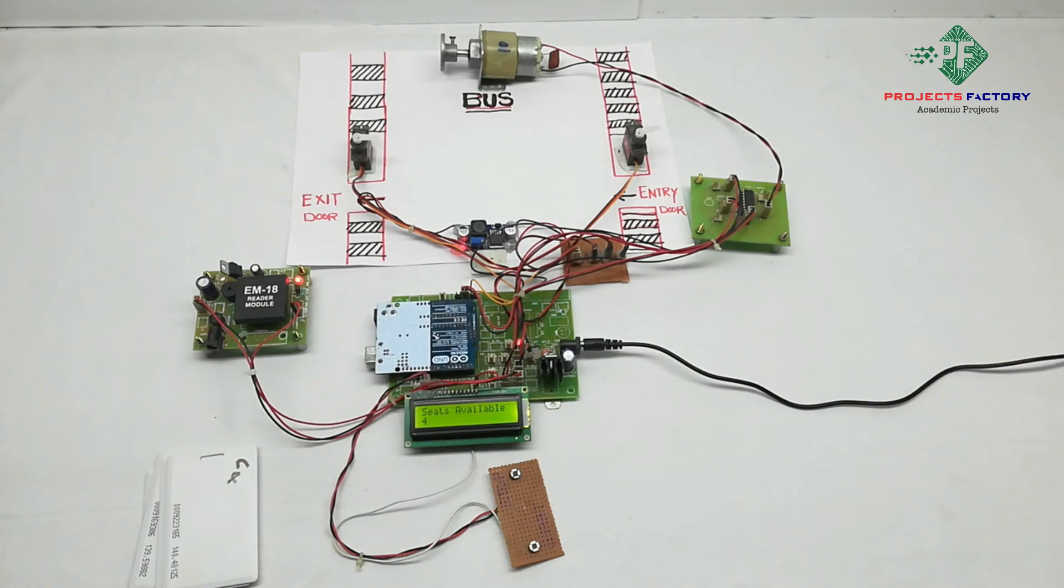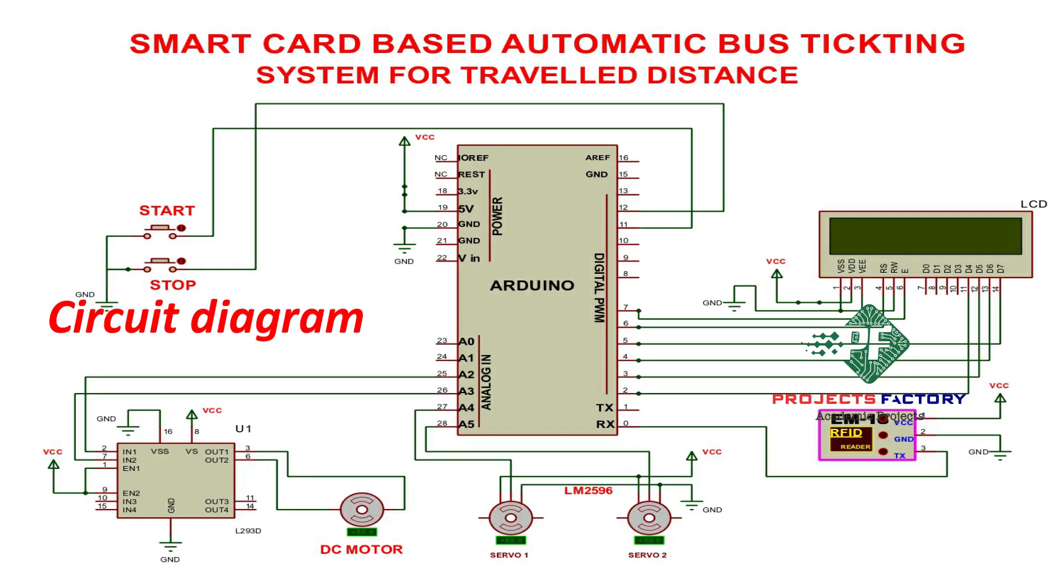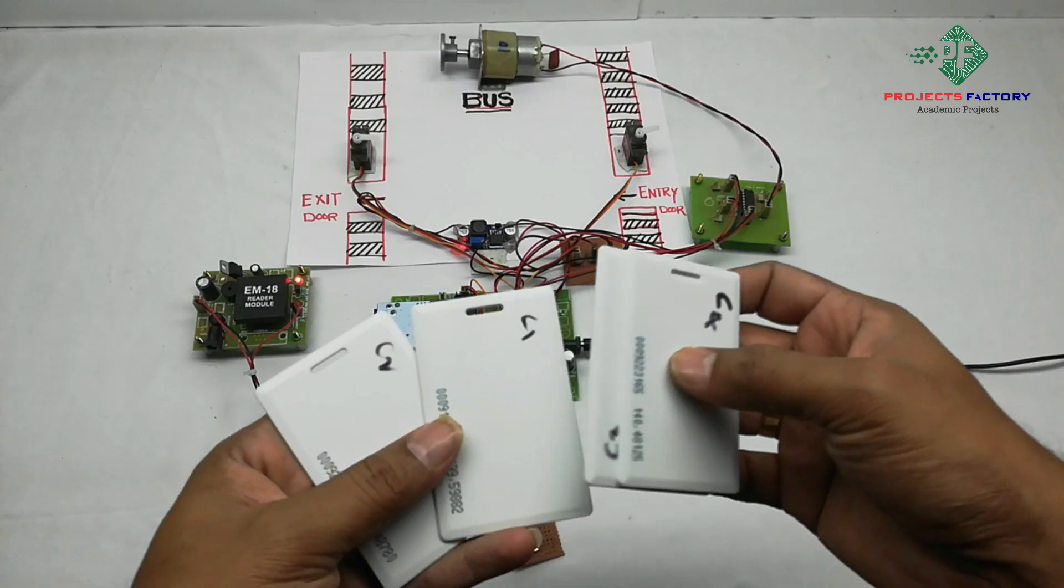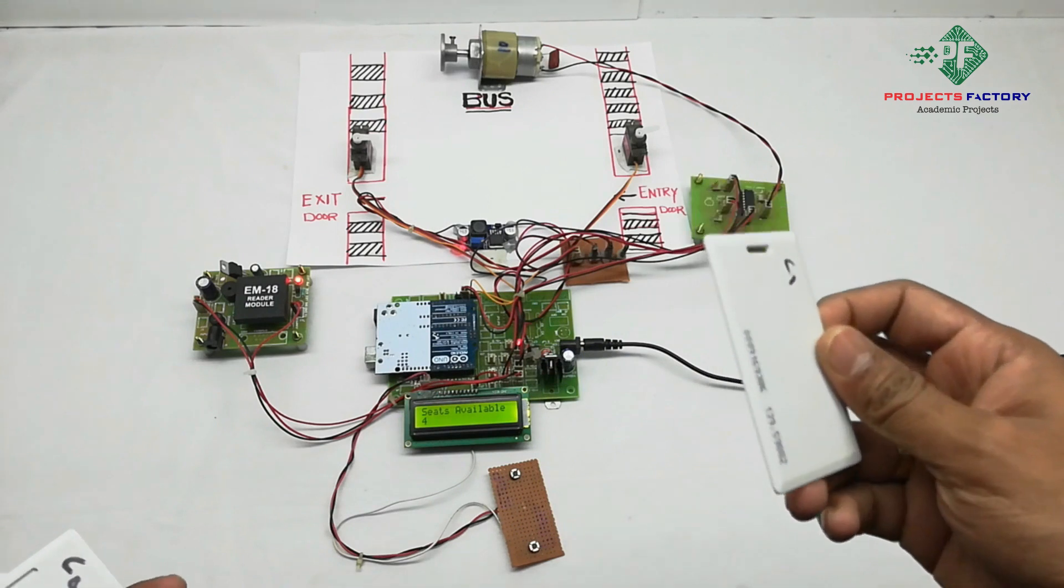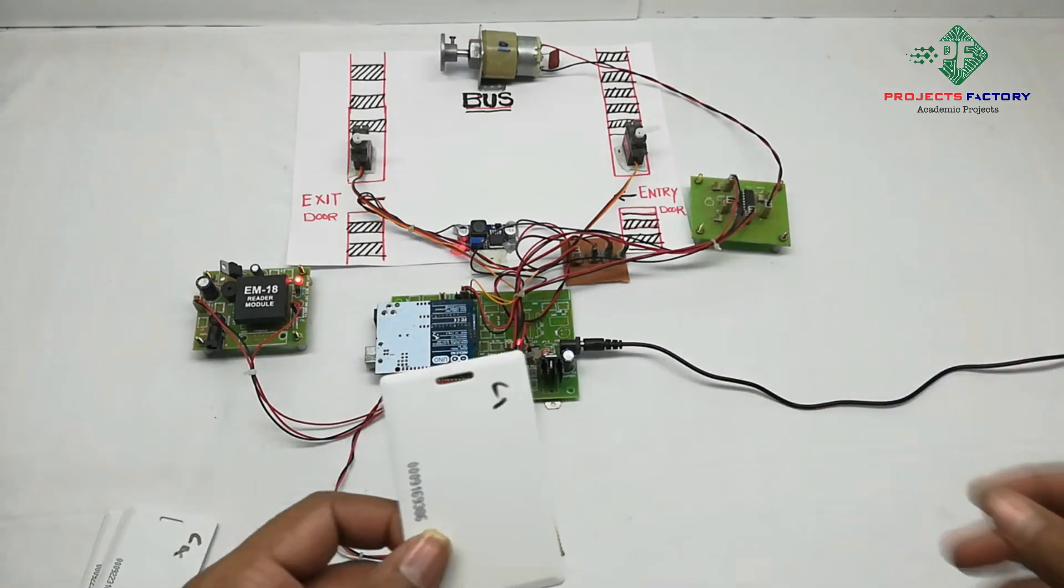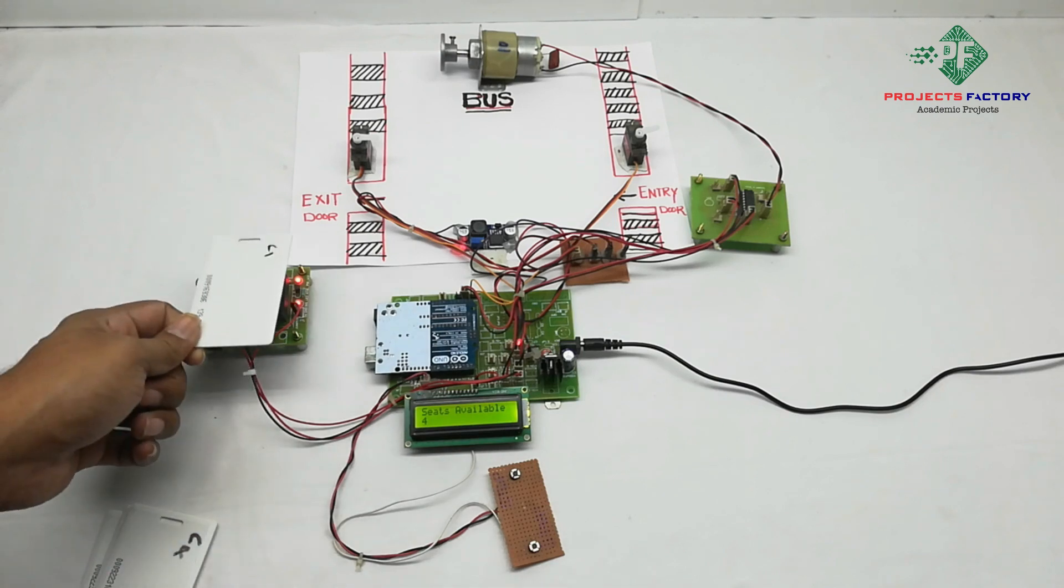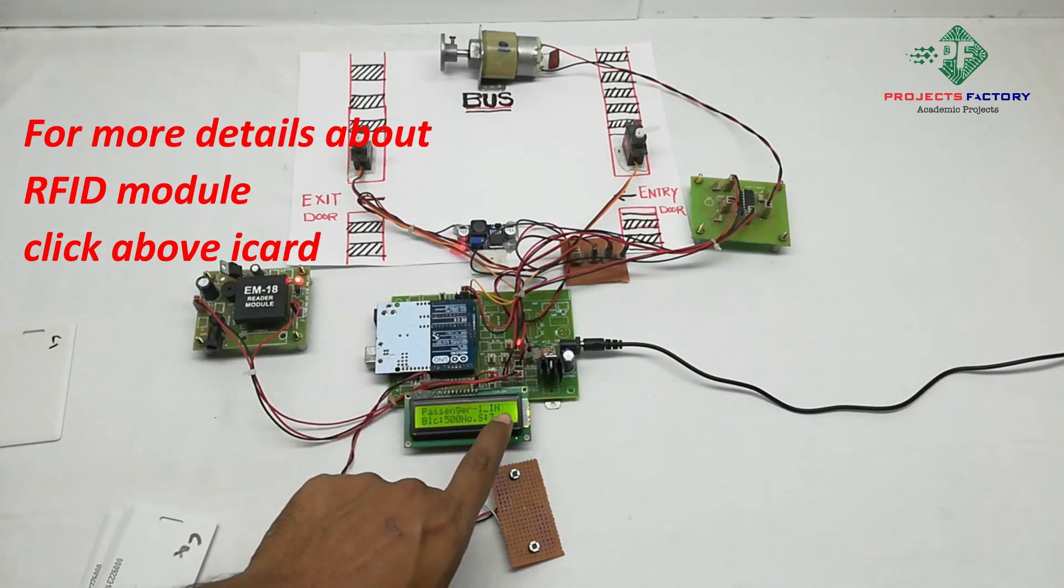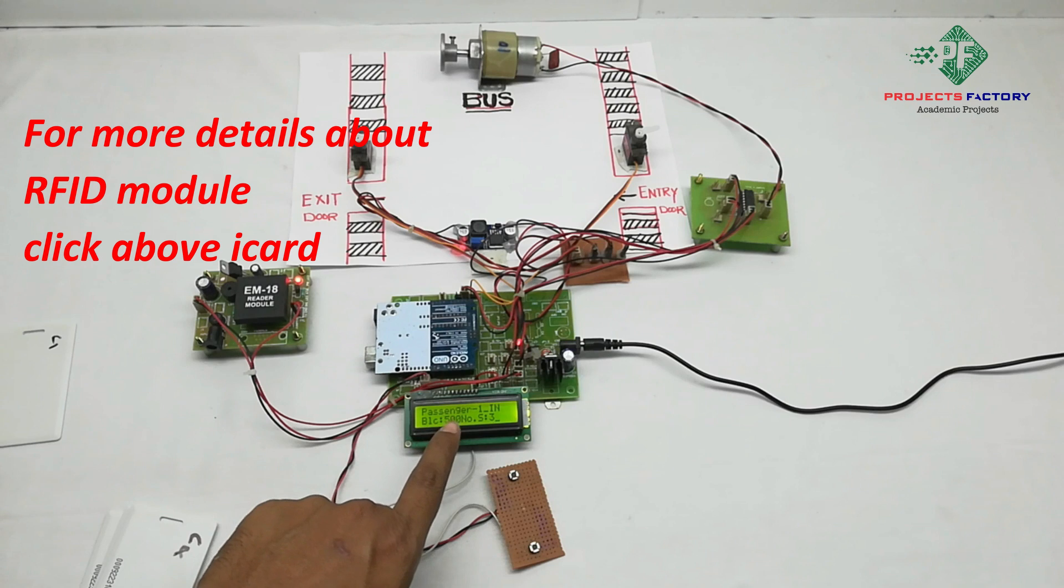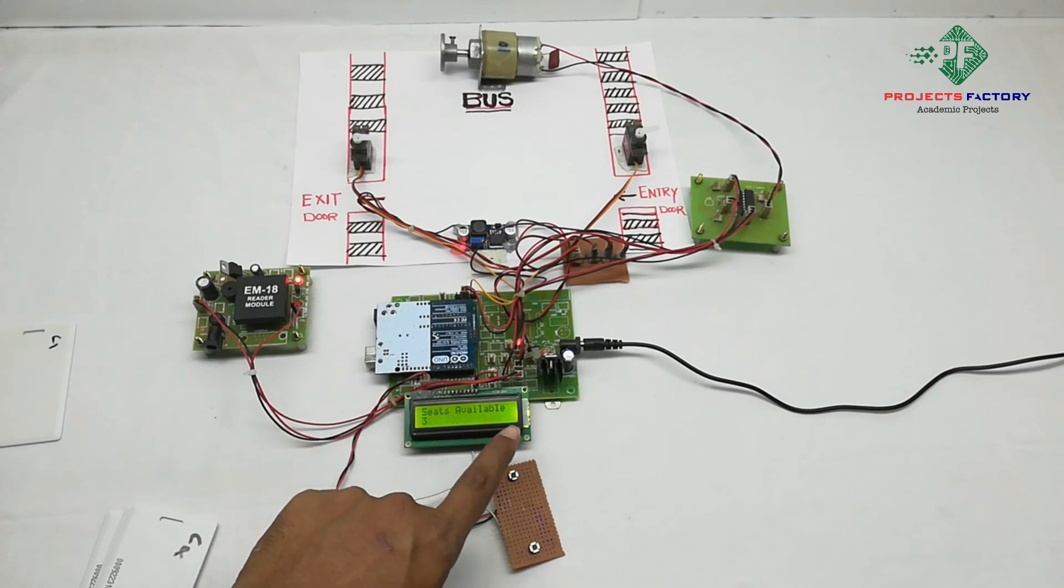Now we'll see the project output. We have four passengers. First, we swipe passenger 1's card on the RFID reader. Passenger 1 in - it's showing balance 500 rupees and seats availability 3.